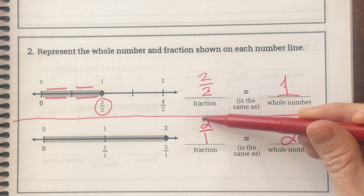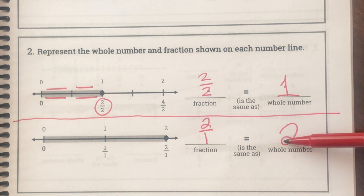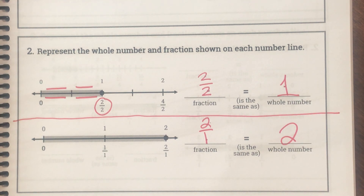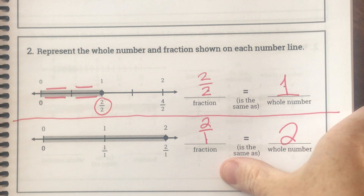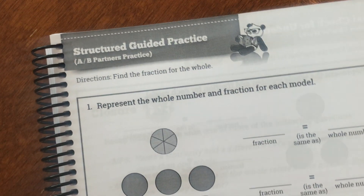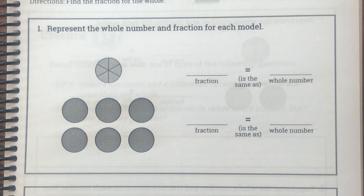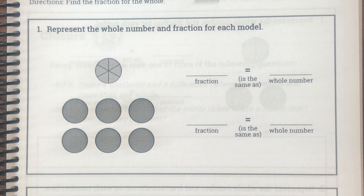So again, you can see the pattern: when the numerator and denominator are the same, it equals one. When you have a numerator on top of a one, it equals that as the whole number. So boys and girls, let's try some of these together. We are on page 116 in your student journal. Here is our first problem: represent the whole number and fraction for each model.